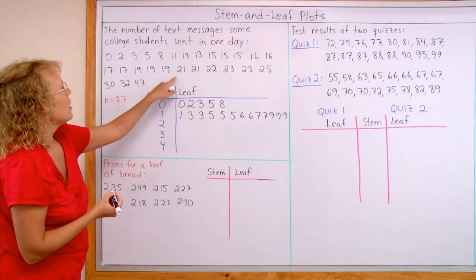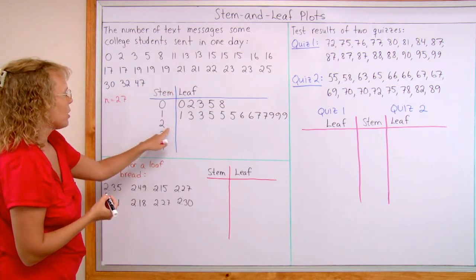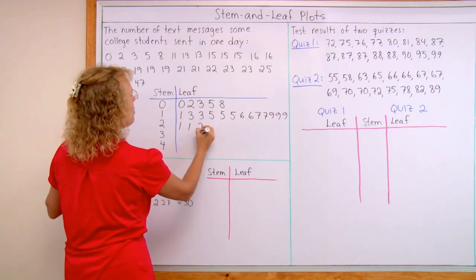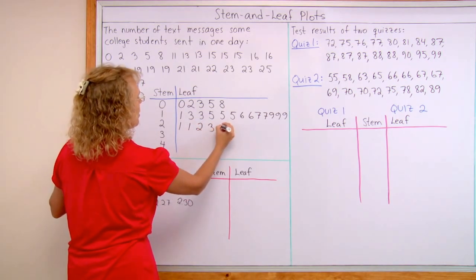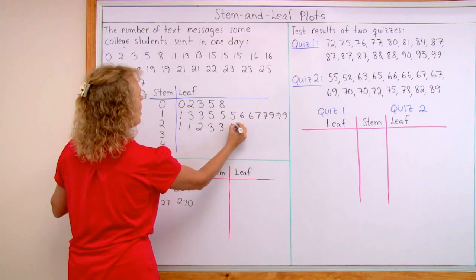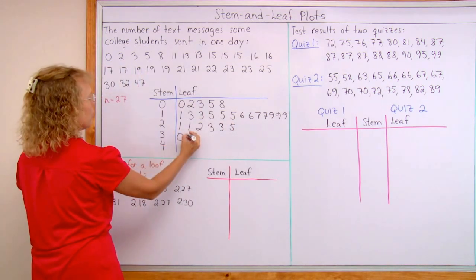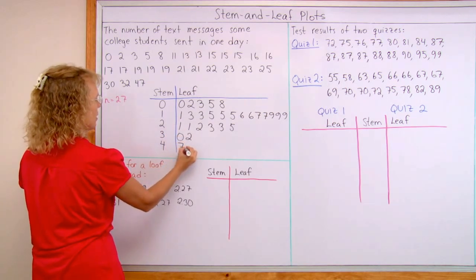Then twenty-one goes here, two tens and one. There's two of those. And then there's twenty-two, twenty-three, twenty-three, twenty-five. And then I come to thirty, it goes here. Thirty-two here, and forty-seven here.